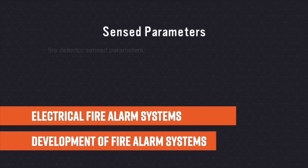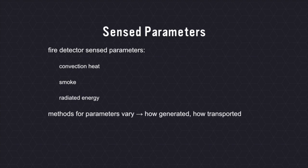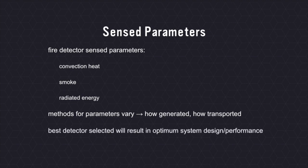With fire detectors, the typical parameters that are sensed are convection heat, smoke, or radiated energy. The methods of each of these parameters will vary for how they are generated and transported. As a result, the best selection of the detector for each expected condition will take these parameters into account for the optimum system design and performance.